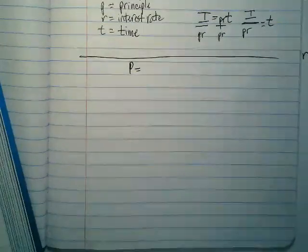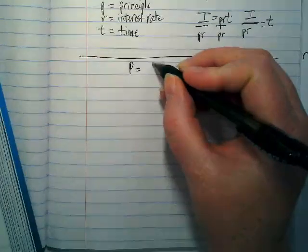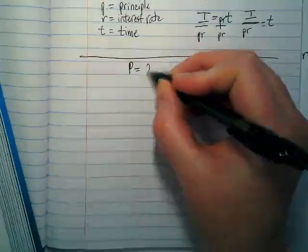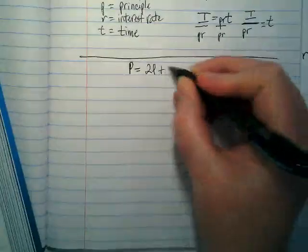If it's perimeter of a rectangle, there is a formula that we can use that makes this a little bit easier than just adding everything. The perimeter formula is two times the length plus two times the width.